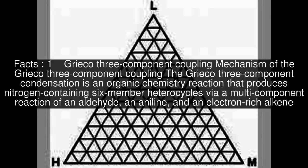The Grieco three-component condensation is an organic chemistry reaction that produces nitrogen-containing six-member heterocycles via a multi-component reaction of an aldehyde, an aniline, and an electron-rich alkene.